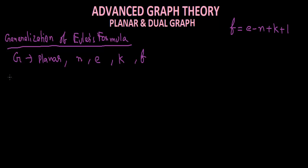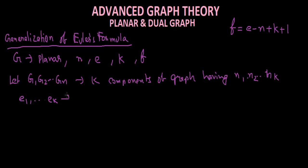Let us start to write. Let G1, G2, and so on up to GK be the K components of the graph, having N1, N2, up to NK number of vertices, E1 up to EK edges, and F1, F2, up to FK faces.